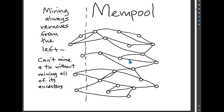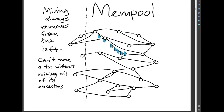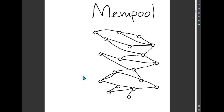One interesting property of the mempool is that mining always removes transactions from the left side of this graph, just the way I've drawn it. We can't mine an individual transaction by itself because we can't mine a transaction unless we mine all of its ancestors — unless they're already mined or we mine them in the same block. So in this case, we could mine these five transactions together. That would be okay. Then we'd end up with this remaining graph in the mempool, the other ones having been removed.